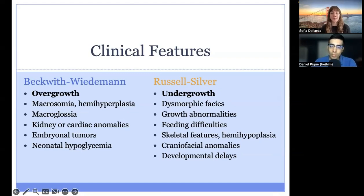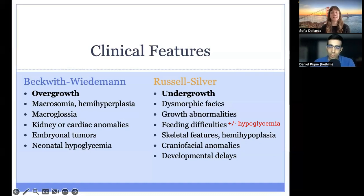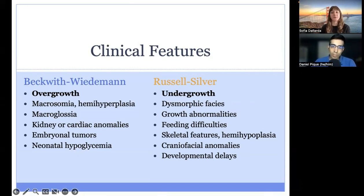Switching over to Russell-Silver syndrome, which is characterized by many undergrowth features. These growth abnormalities include being small for gestational age, postnatal growth failure, or growth hormone deficiencies, which can all be evaluated by endocrinology. Most individuals have dysmorphic features such as relative microcephaly at birth or frontal bossing. Most infants with Russell-Silver have feeding difficulties, which can warrant referrals to gastroenterology or nutritionists. Most individuals have skeletal features, and very commonly this includes fifth finger clinodactyly. Some features such as scoliosis or hemihypoplasia may warrant special evaluations. Most individuals with Russell-Silver syndrome have craniofacial anomalies such as cleft palate that may require intervention. Many individuals have developmental delays, including global developmental delays or speech delays, which can warrant educational support.